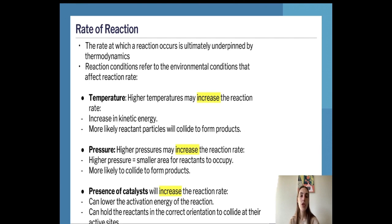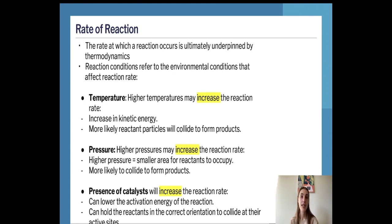When we consider temperature, higher temperatures may increase the reaction rate because they increase kinetic energy — we're putting more energy in as heat, so particles move around more. When particles move around more, they're more likely to collide, react, and create a product. They have to collide at the correct orientation at or above the activation energy to form products, so more collisions makes it more likely reactant particles will collide to form products.